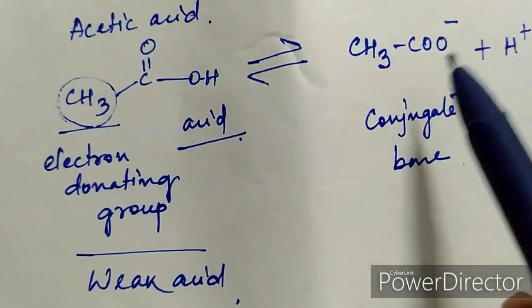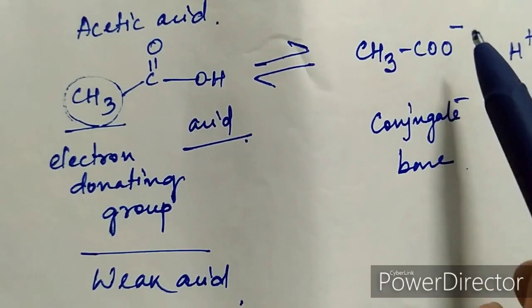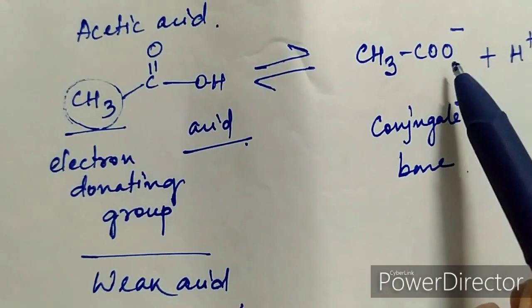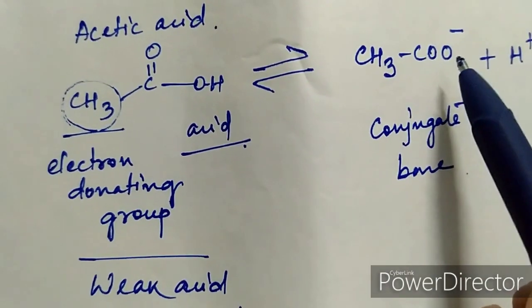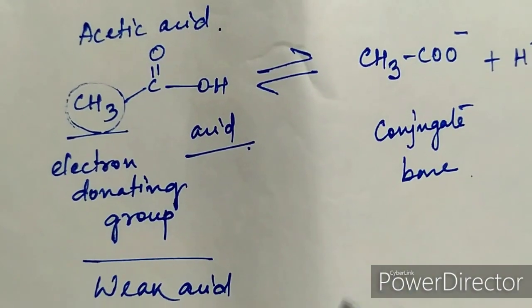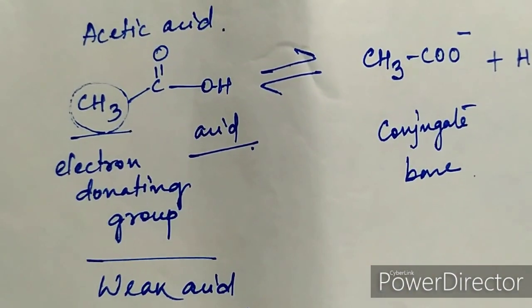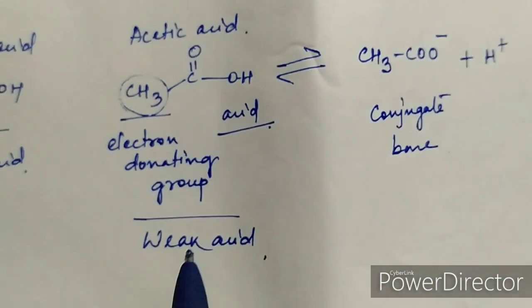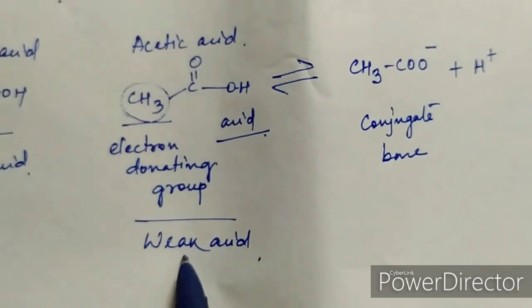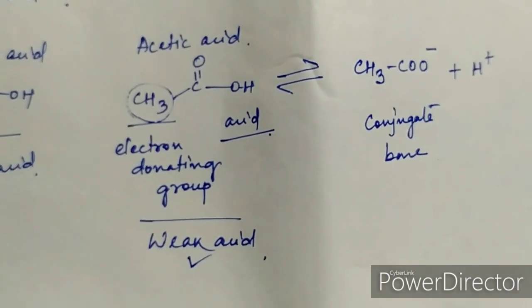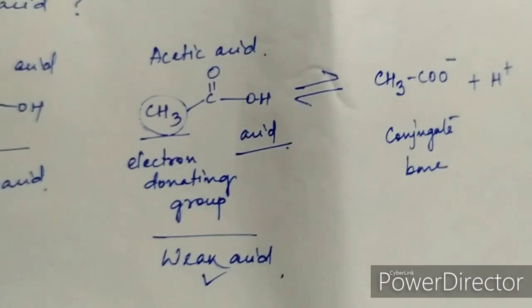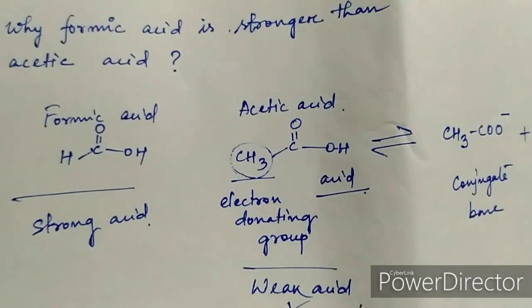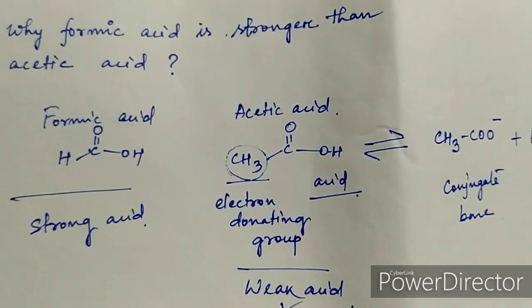If electron density increases, it destabilizes the conjugate base by enhancing the existing negative formal charge on the deprotonated oxygen. That is why acetic acid is actually a weak acid.